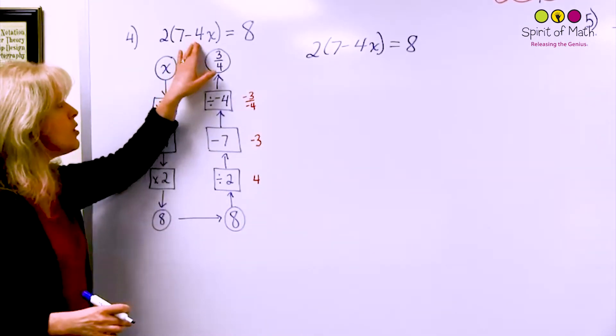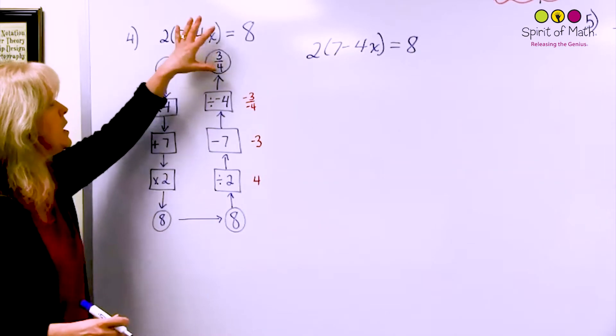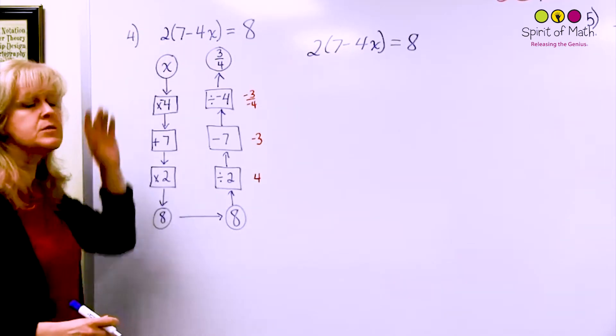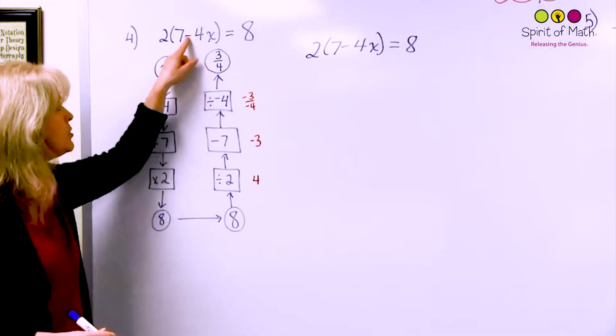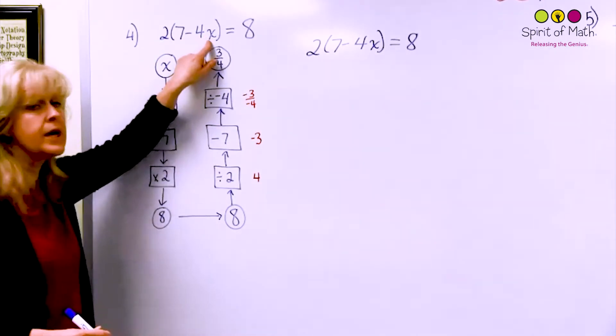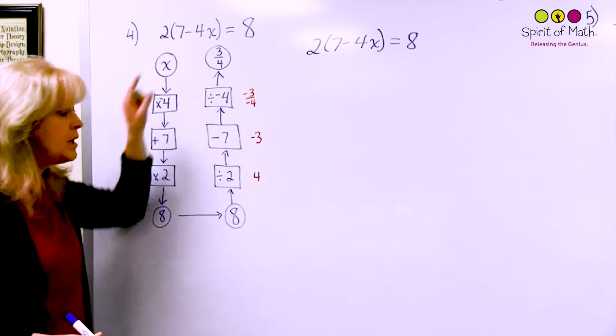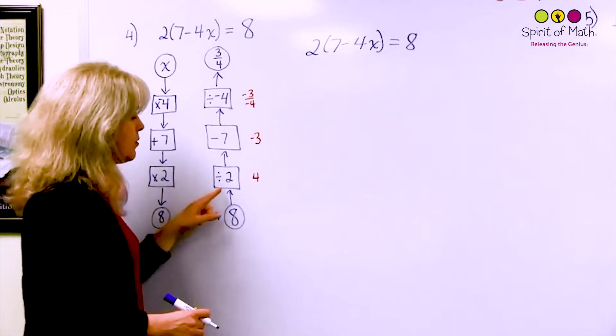Notice that when we worked backwards we always started with the last thing that you would do to that x. So the 4 is attached really tightly. The furthest thing away from the x is what you always start with. It's the reverse of how you would do it if you knew what that x was and you were just calculating. So let's start with that.